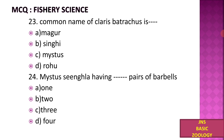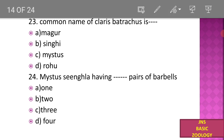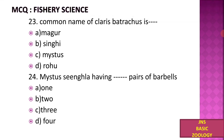Next, the common name of Clarias batrachus is: A) Magur, B) Singhi, C) Mystus, D) Rohu. Clarias batrachus is commonly known as Magur, or called the Magur fish.